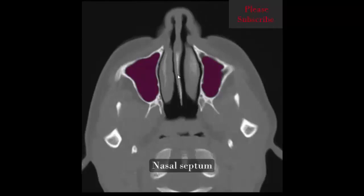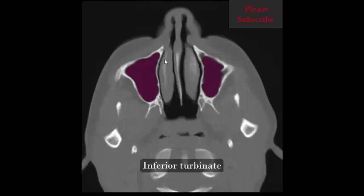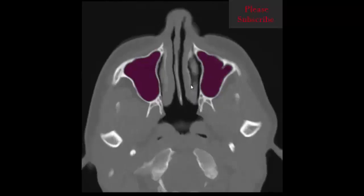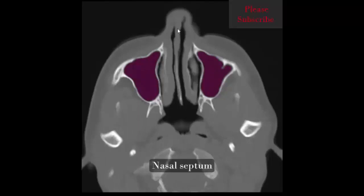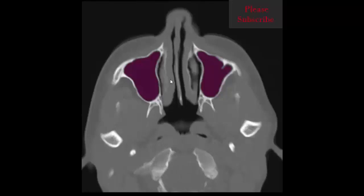At the next level, we again identify the nasal septum, nasal cavity, right and left inferior turbinate, and right and left maxillary sinus.